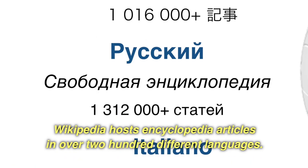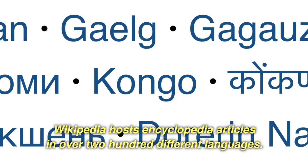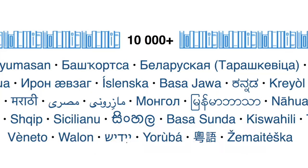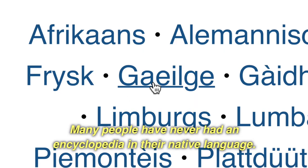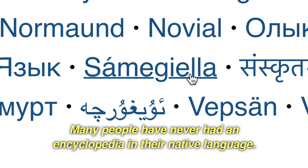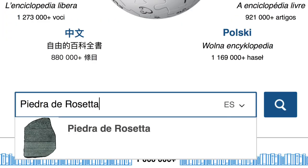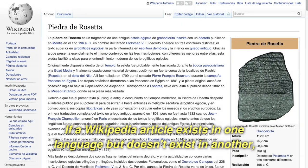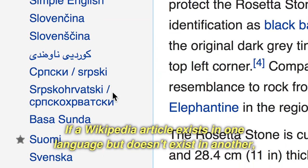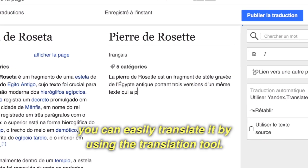Wikipedia hosts encyclopedia articles in over 200 different languages. Many people have never had an encyclopedia in their native language. If a Wikipedia article exists in one language but doesn't exist in another, you can easily translate it by using the translation tool.